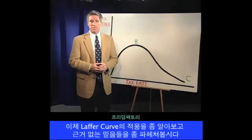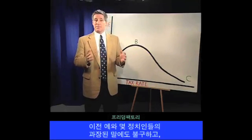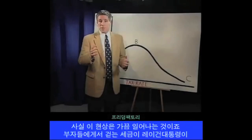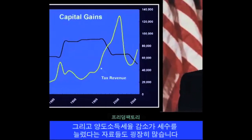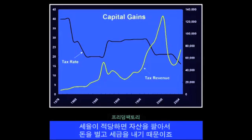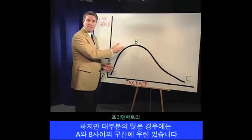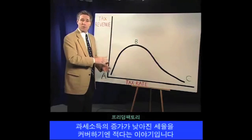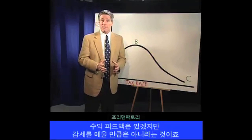Now let's consider some of the implications of the Laffer Curve and dismiss some of the myths. There are three things you should understand. First, notwithstanding the previous example and the exaggerated claims of some politicians, the Laffer Curve does not mean that all tax cuts pay for themselves. It is only in very rare cases that this happens. There is pretty good evidence that tax collections from the rich rose when Reagan cut the top tax rate from 70% to 28%, and data shows that reductions in capital gains tax rates have increased tax receipts. But in the vast majority of cases, we're on the left side — the upward sloping side — of the Laffer Curve. The economy will improve and taxable incomes will rise, but the increase in taxable income will not be enough to offset the effect of the lower tax rate. There will be revenue feedback, but not enough to make a tax cut self-financing.